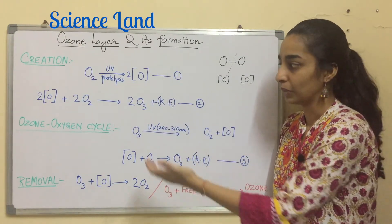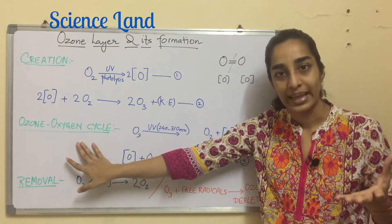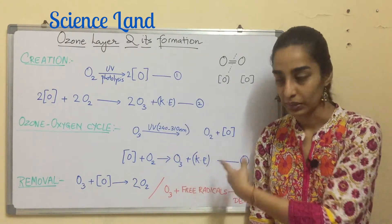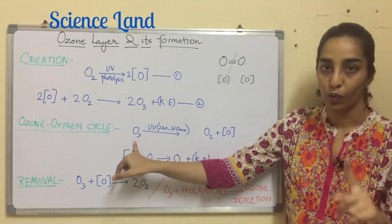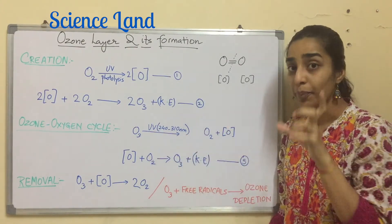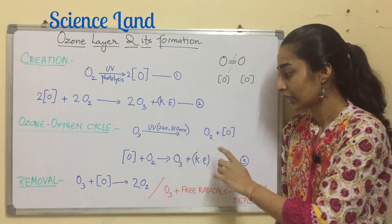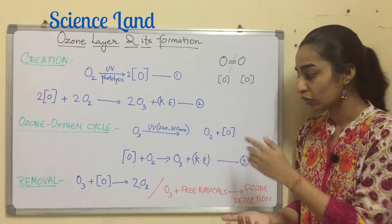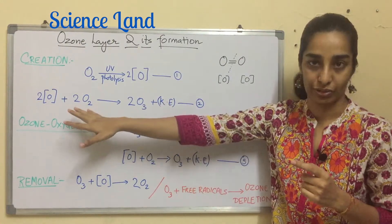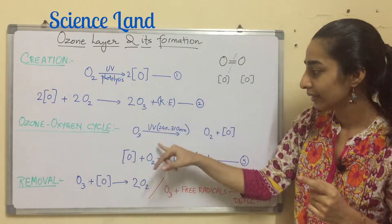Now there is the second step which is known as ozone oxygen cycle. It is also known as Chapman cycle because the person's name was Chapman who discovered this thing. One molecule of ozone under the presence of UV radiation which is the appropriate range 240 to 310 nanometer wavelength will break down into O2 and oxygen. It's the reverse of this particular reaction.